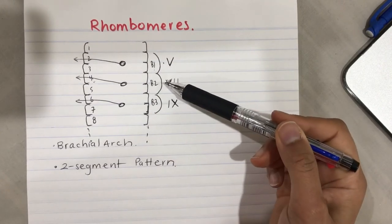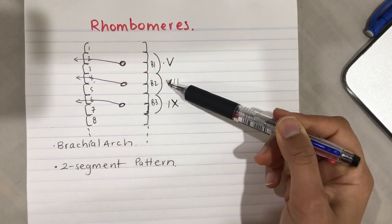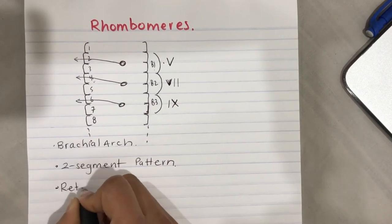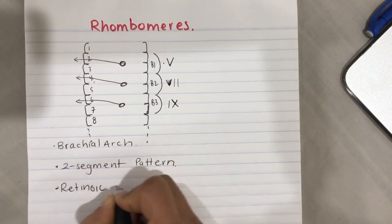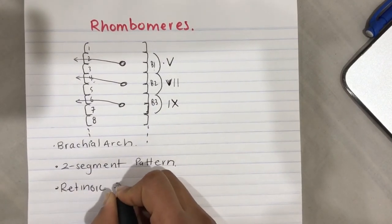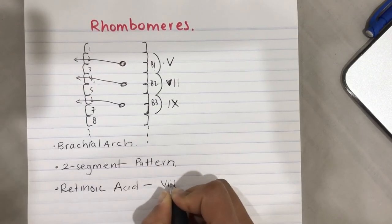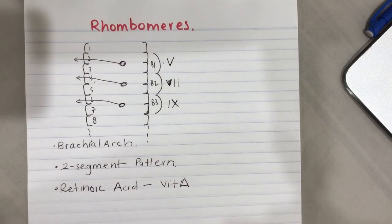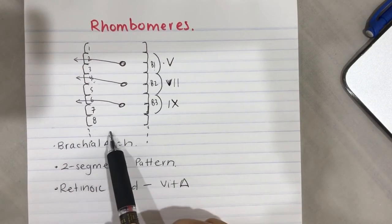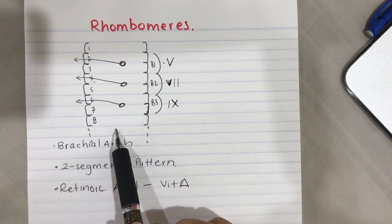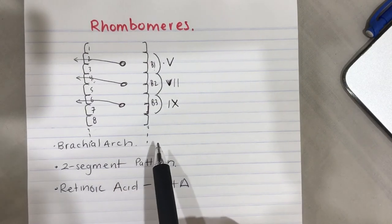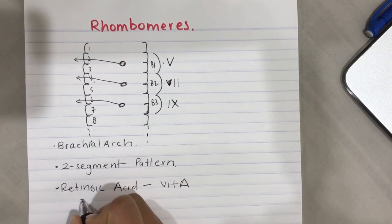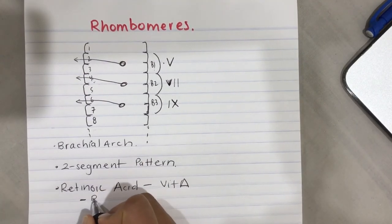Retinoic acid is a derivative of vitamin A. It's released from the hindbrain and spinal cord, and binds to the retinoic acid receptor.